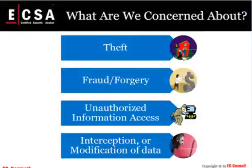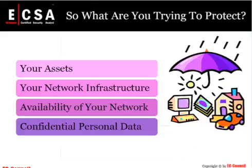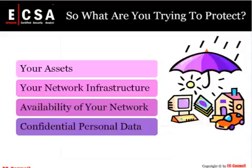When we talk about security, we're concerned about very specific factors — for example, theft, fraud or forgery, unauthorized information access, and interception or modification of data. When you're trying to protect your environment, you need to be clear on what your protected company assets are, including the assets themselves, the network infrastructure, the availability of your network, and confidential personal data.